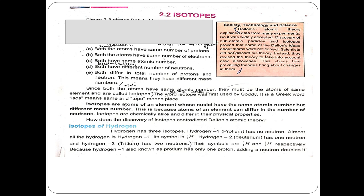Isotopes are elements whose atomic number is the same but mass number is different. The mass number is different because the number of neutrons is different.